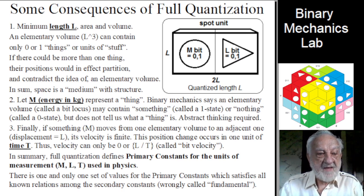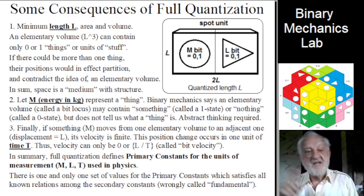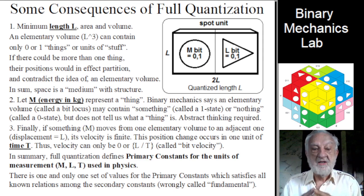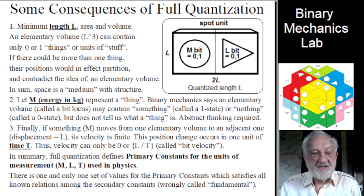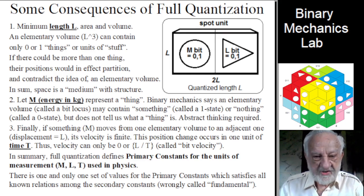Second, let M, energy in kilograms, represent a thing. Binary mechanics says an elementary volume called a bit locus may contain something called a one state or nothing called a zero state, but does not tell us what a thing is. Abstract thinking required.